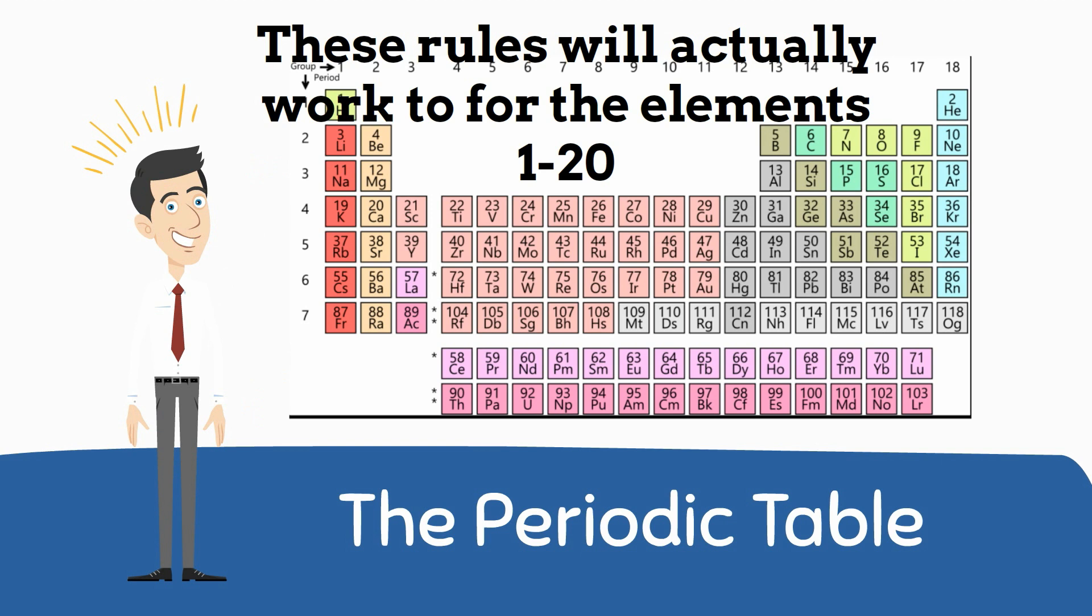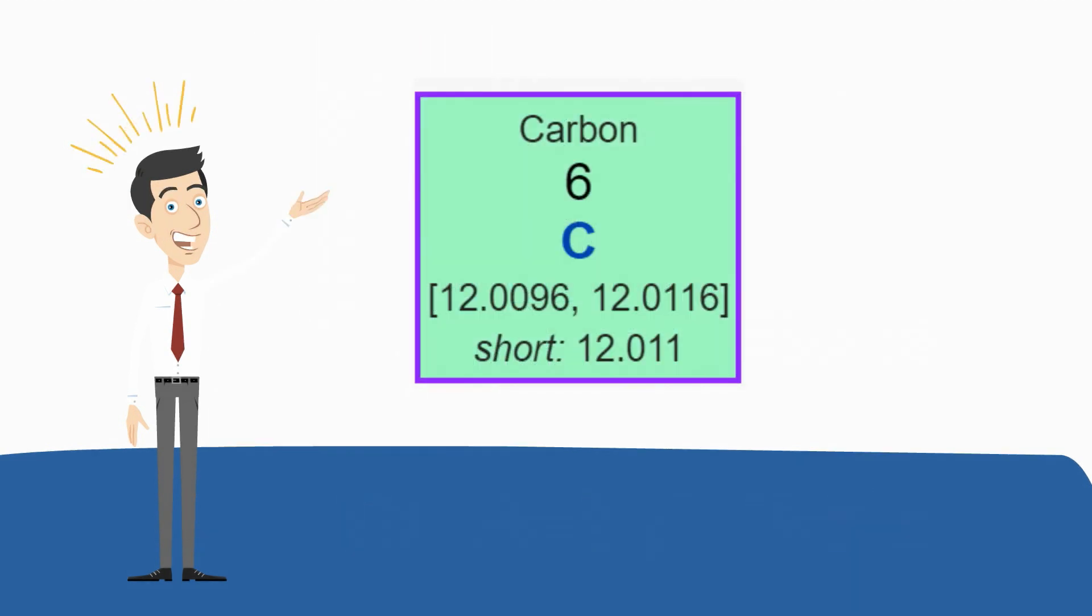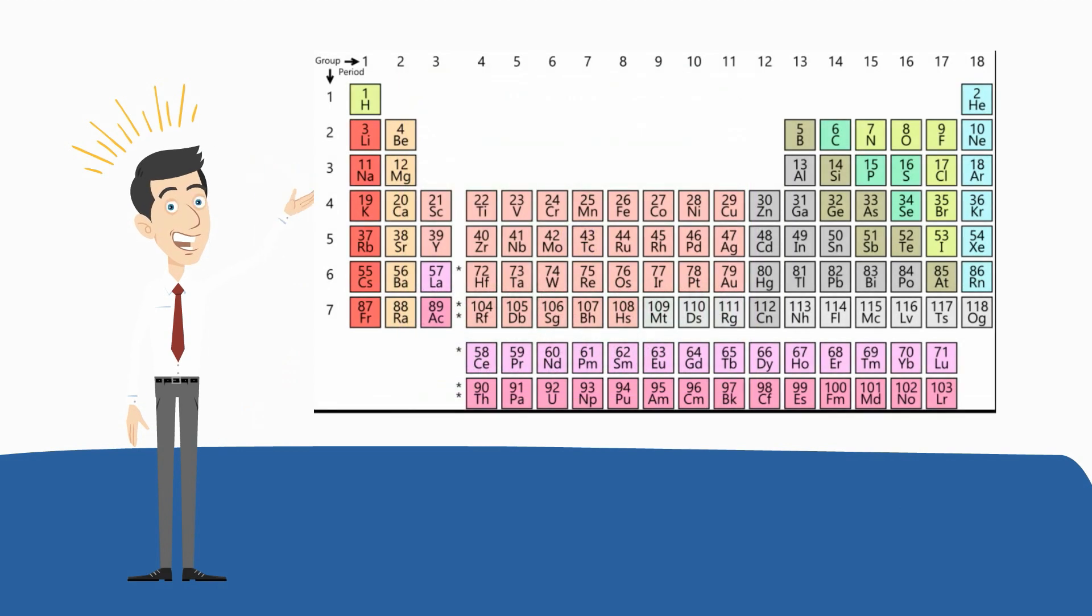Let's get started with the element carbon. Step one is you can locate carbon on the periodic table and you will notice that it is in the row or period number 2. So that tells you that it's going to have 2 shells.